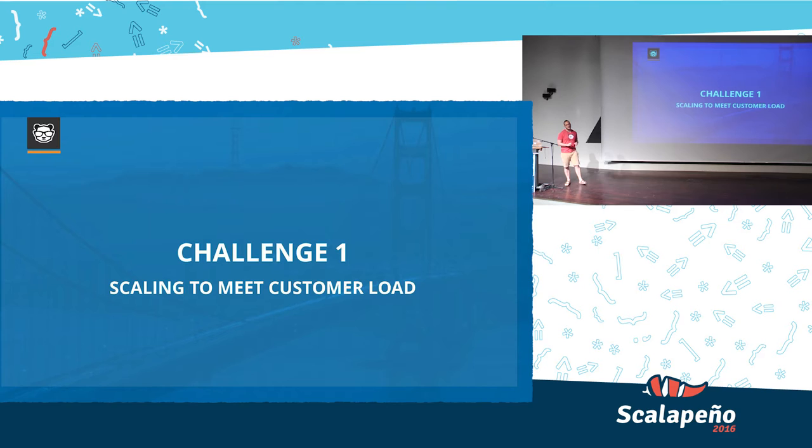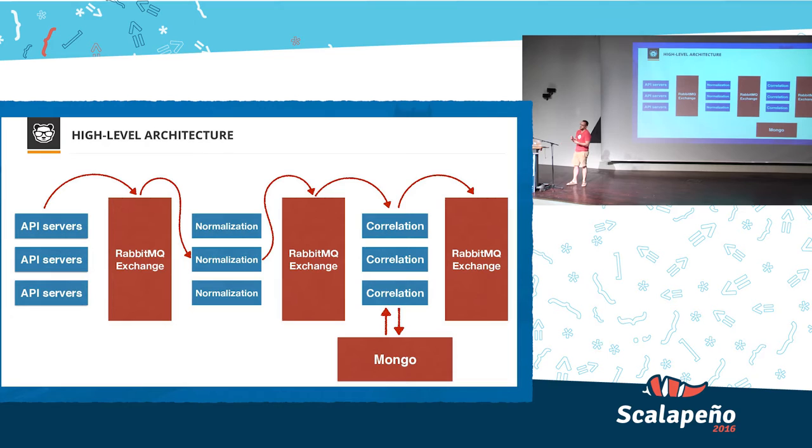The first challenge we were facing last year is scaling to meet customer load like all startups. This is a high-level overview of our internal architecture. We have API servers, we have normalization servers, and we have correlation servers. The correlation servers modify the data in Mongo, and there are also front-end applications which read the data from Mongo. What we use internally to route data between the services is RabbitMQ.